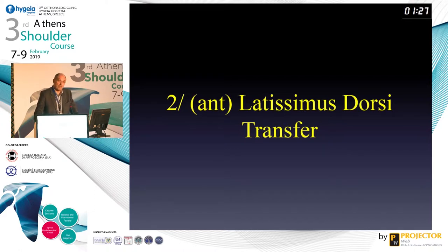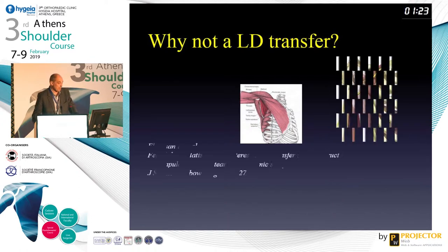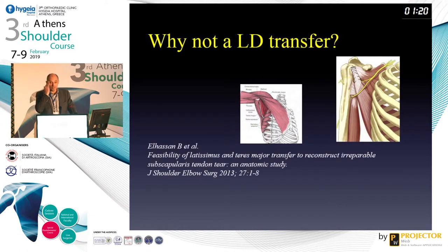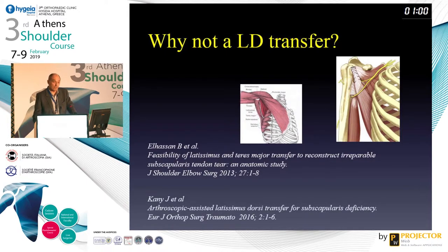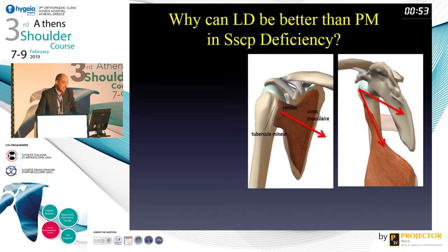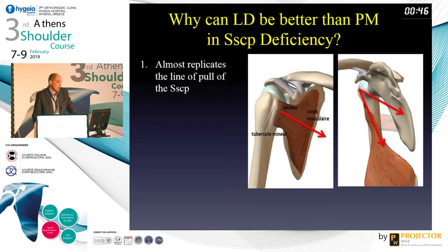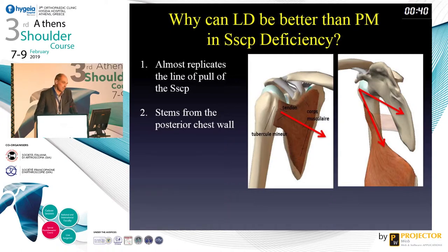What about the lat dorsi transfer now? The lat dorsi comes from the posterior chest wall, and it's exactly parallel to the subscap. Biomechanically there is a better anatomy, and this is in fact a subscap-like tendon. Bassett and Mellissane from the Mayo Clinic first published the anatomical feasibility of this technique, and I published an arthroscopic technique to harvest it with a clinical report. The two lines of pull of the subscap and the lat dorsi are very close - it replicates the line of pull, and because of that we think this transfer could be better than the pec major.